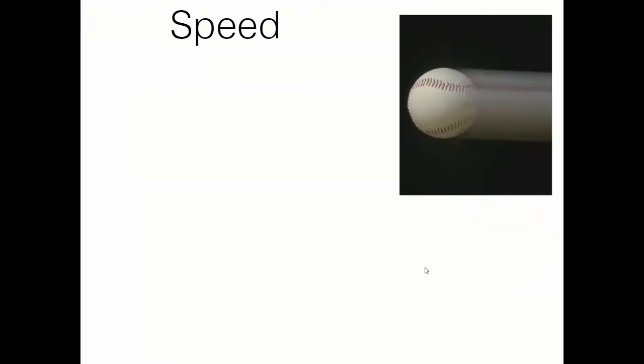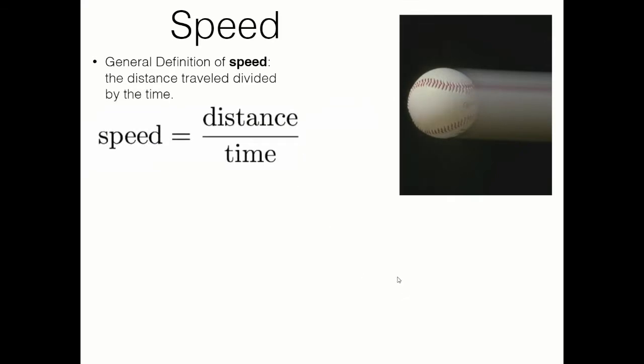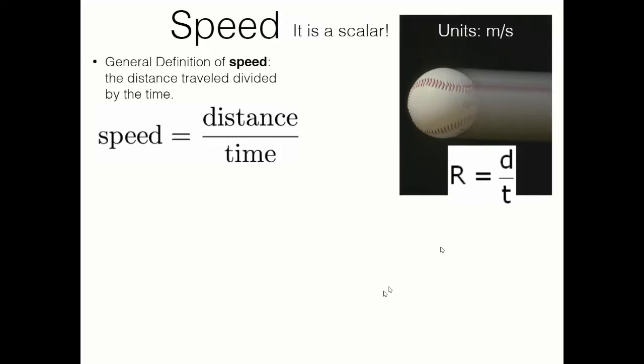First I want to define speed. Speed is a term you've used quite a bit in math word problems or early science word problems, and we're going to define it in physics right now. Generally speaking, speed is the distance traveled divided by the time it took to travel that distance — distance over time. You may have experience with this formula from Algebra 1 or Math 1 word problems as rate equals distance over time. The unit for speed is meters per second specifically.